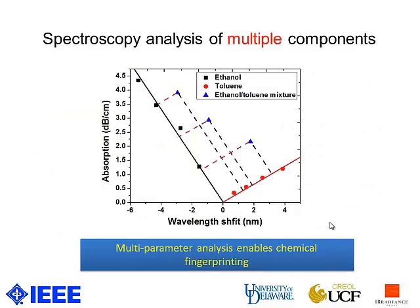When we plot the wavelength shift and absorption in a two-dimensional plot, we can individually analyze the difference between ethanol and toluene, and also quantify and analyze the concentration of the mixtures. This on-chip cavity-enhanced spectroscopy not only gives you the ability to analyze single chemicals, but also enables multi-parameter analysis for chemical fingerprinting.